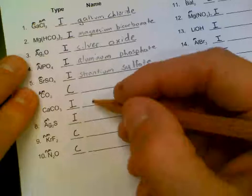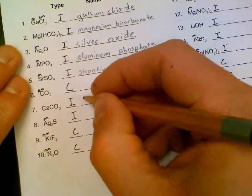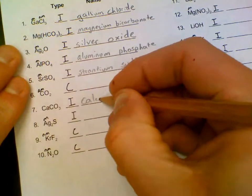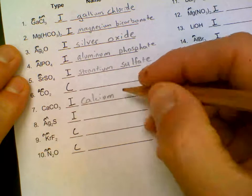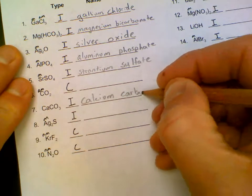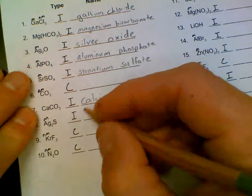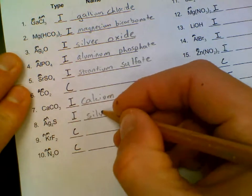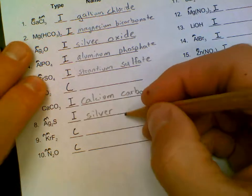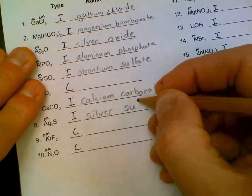We're going to skip the covalent until the end. Calcium, full name. CO3 is called carbonate. Ag, we've already used, silver. S gets the anion style name, sulfide.